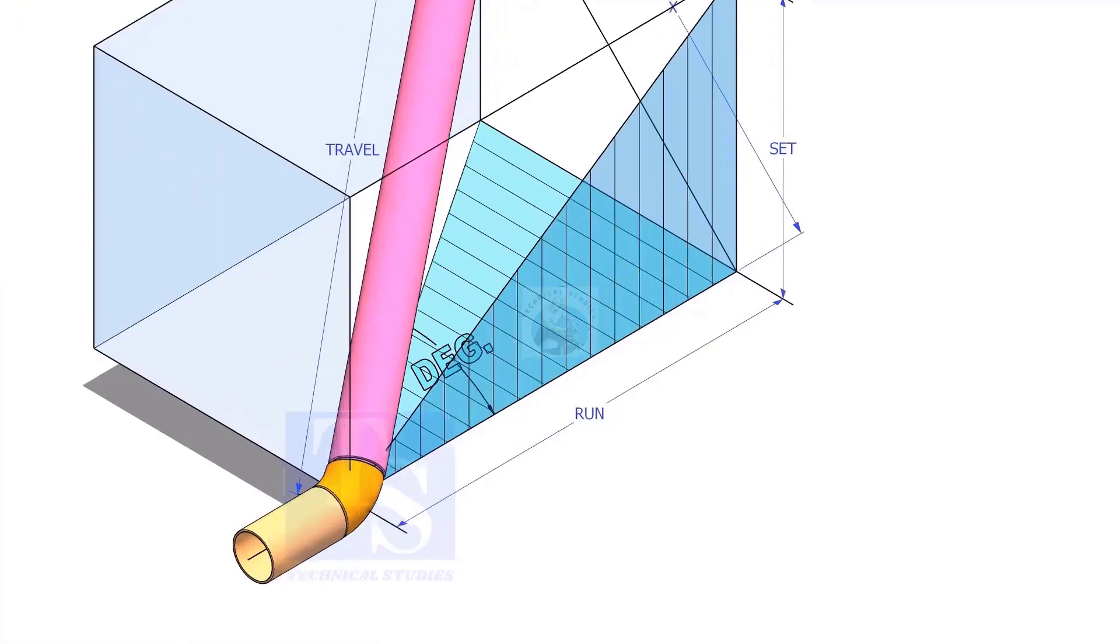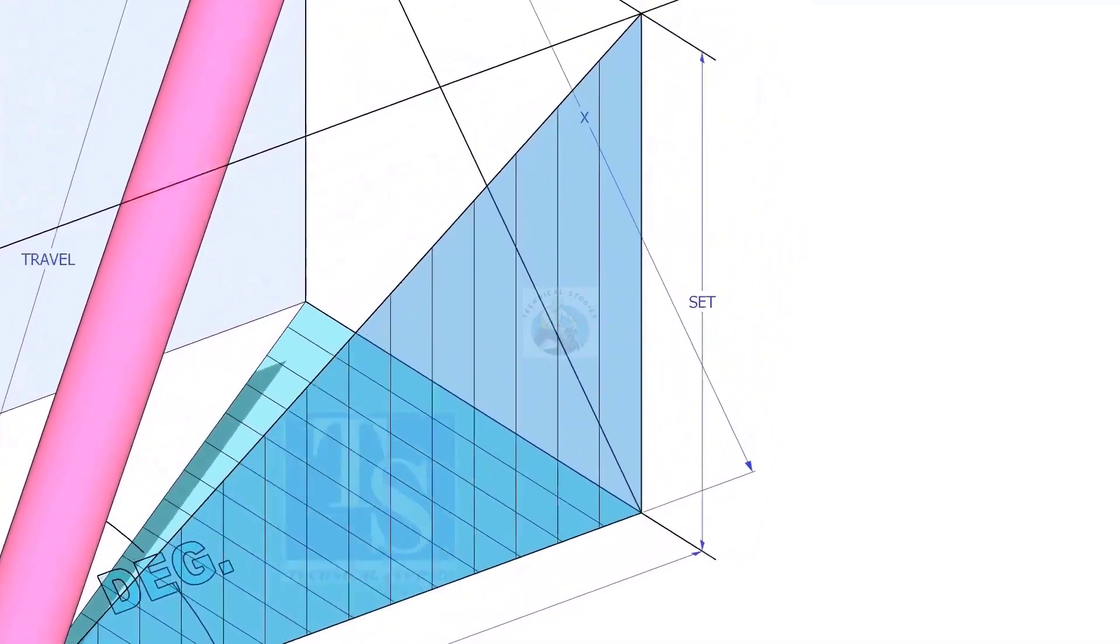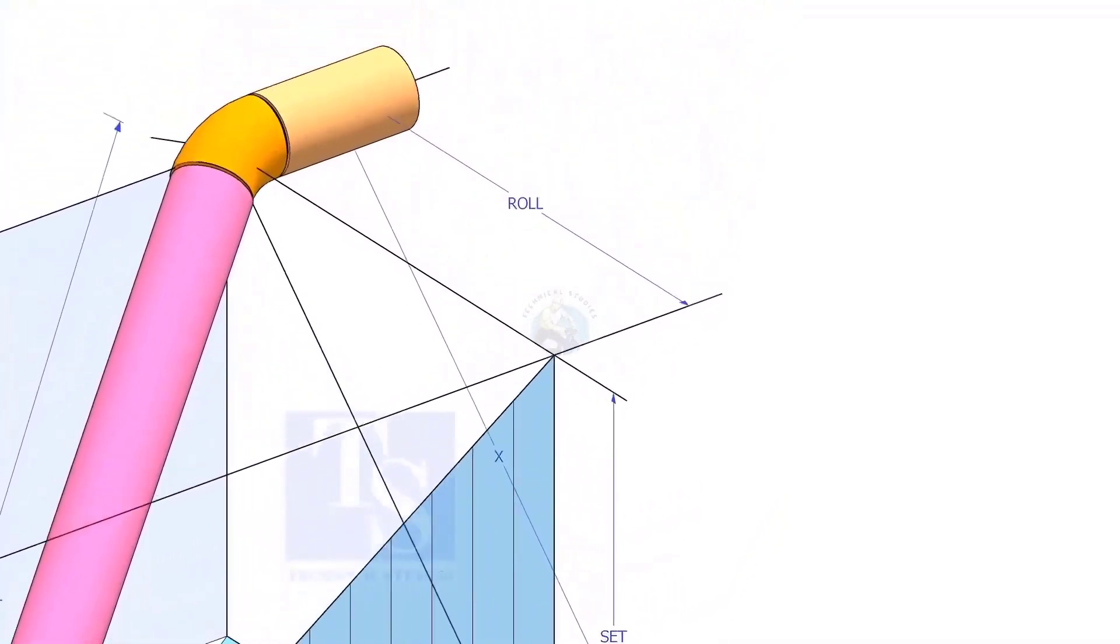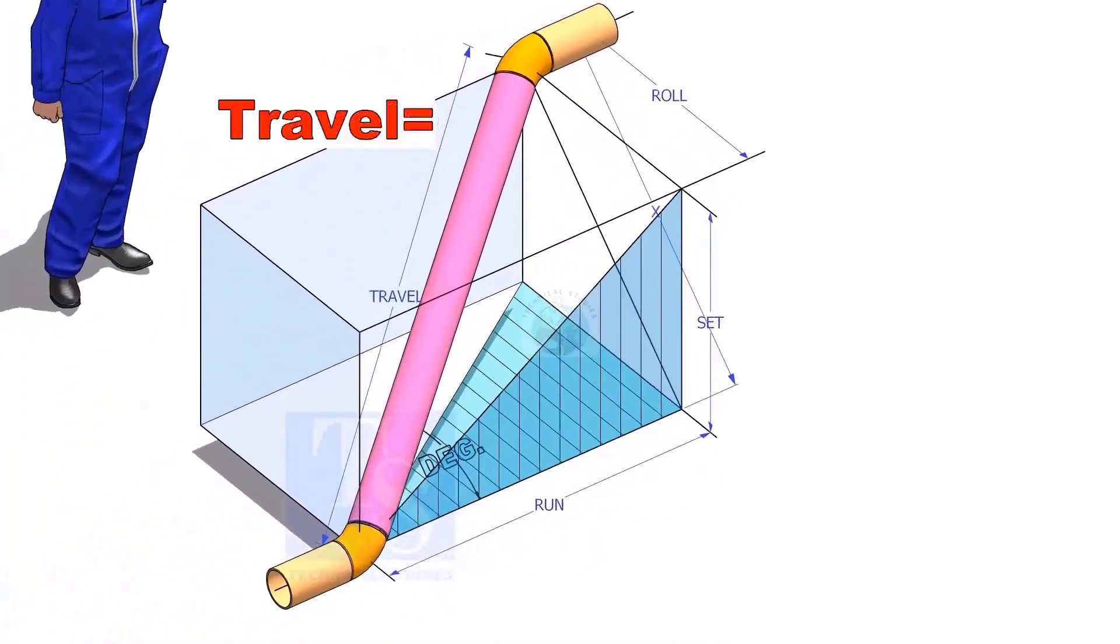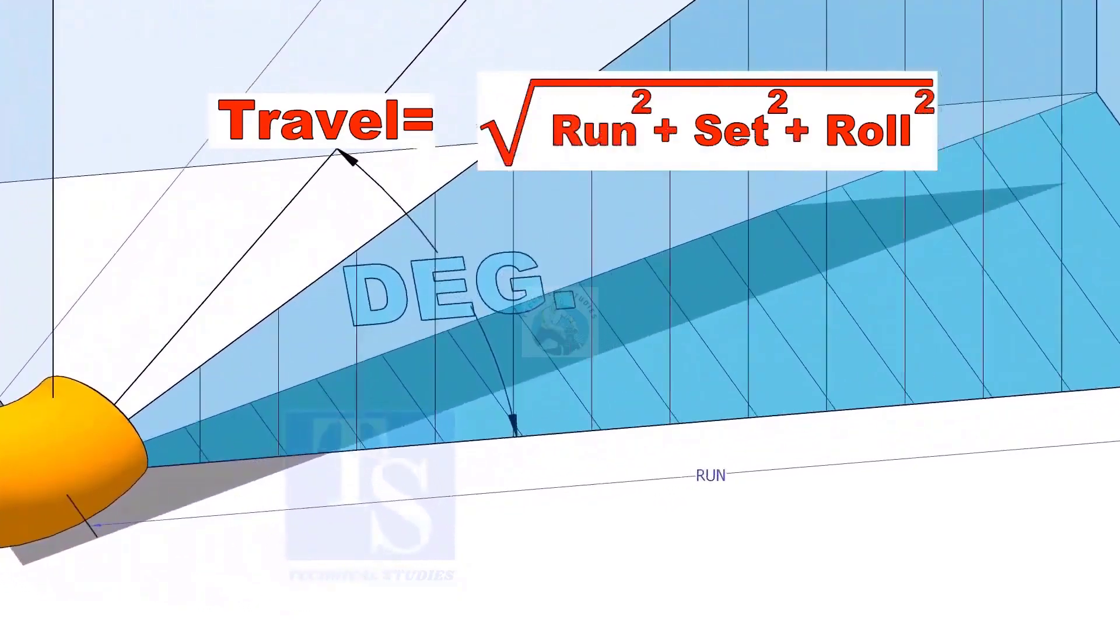In this video, I will show you how to calculate the travel length and the including angle of a double rolled offset pipe. The formula to calculate the travel length is root of the sum of the run, set, and roll.